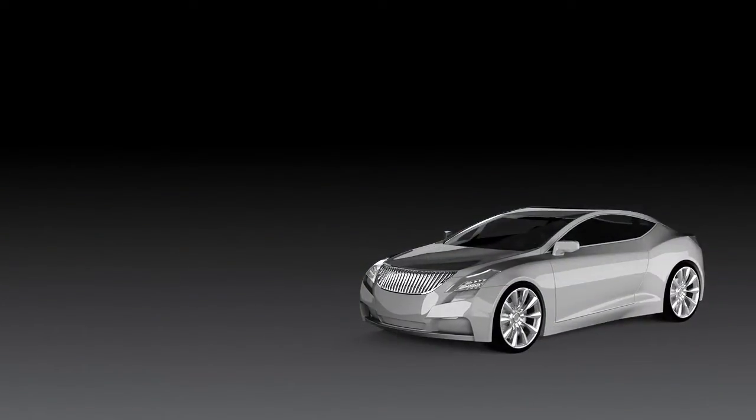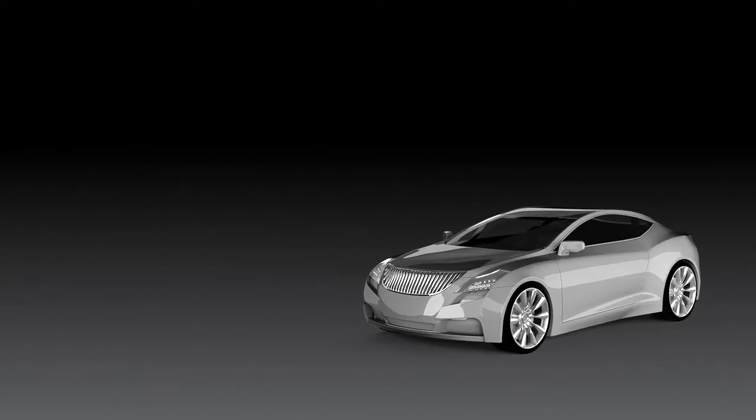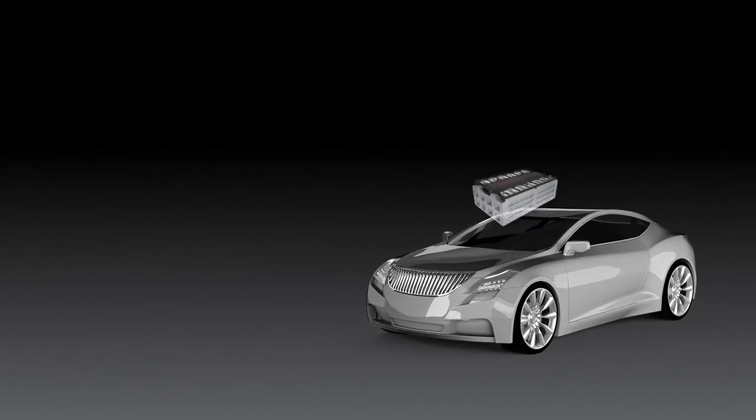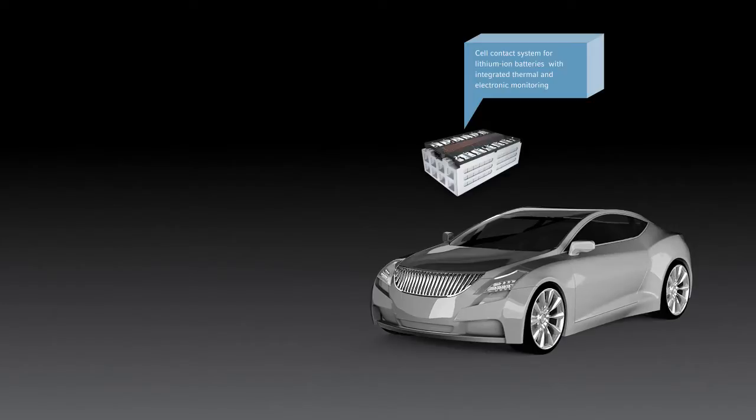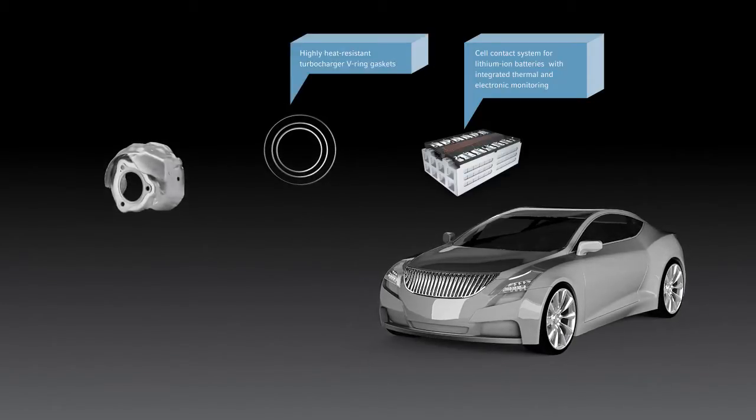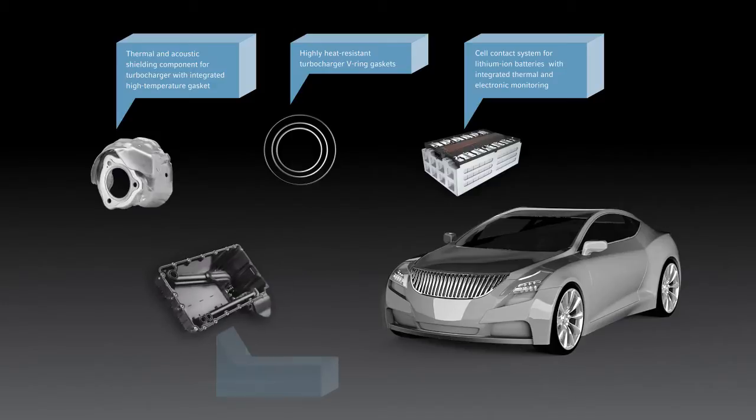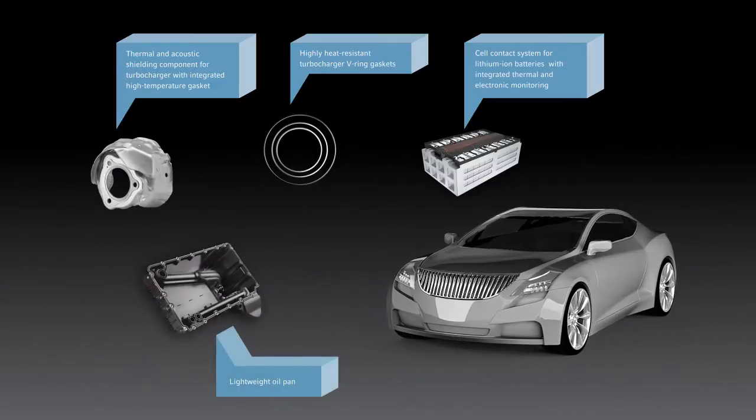Elring Klinger elected to expand its basic portfolio early on to develop products for electric engines. Cell contact systems for lithium-ion batteries, pressure equalization modules, cell housings and battery housing gaskets.